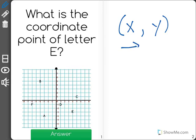Where x is the value from left to right, the horizontal value, and y is the value, the vertical value, up and down.